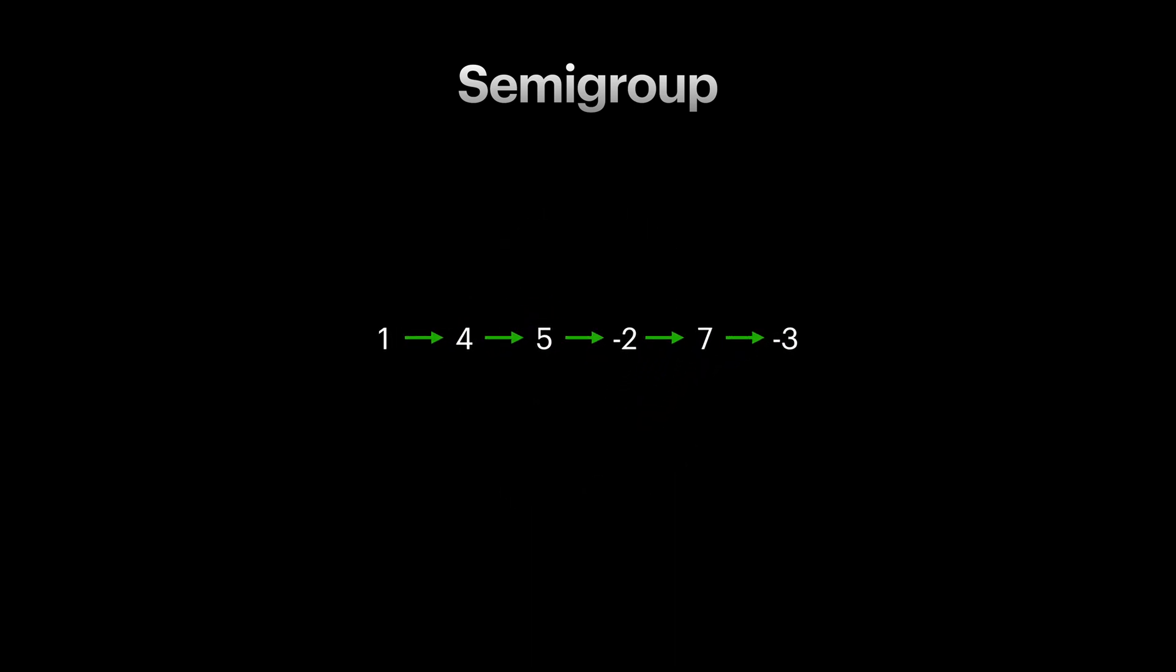Moving these in one line and replacing arrows with plus signs gives us a simple expression. Just don't forget I'm talking in the context of semigroups, and these plus signs are actually our concat operation for integer type.